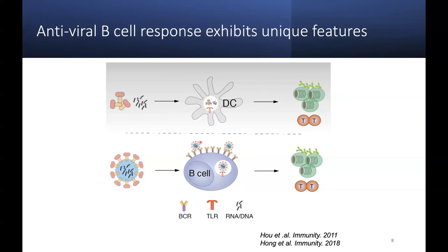Before diving into the data, let me say a few words about why we stepped into this field. As I mentioned, we are interested in antiviral B cell response. Previously, we demonstrated that B cell toll-like receptors can sense viral genomic materials and synergize with B cell signaling to enhance antibody response. We also demonstrated that under these conditions, antigen-specific B cells — rather than dendritic cells — can serve as dominant professional antigen-presenting cells to prime CD4 T cell responses. This unique feature of antiviral response suggests there are still new things unexplored and worthy of discovery.